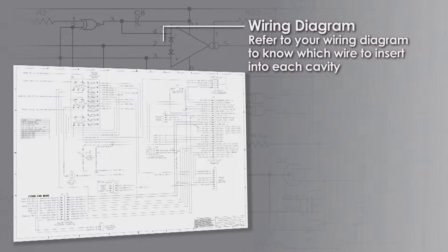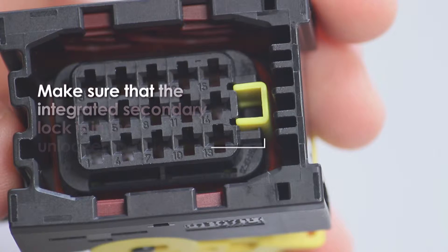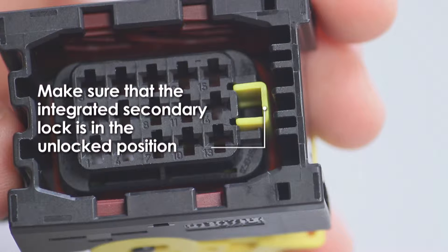Refer to your wiring diagram to know which wire to insert into each cavity. Cavities are marked with numbers. Check that the integrated secondary lock is in the unlocked position.